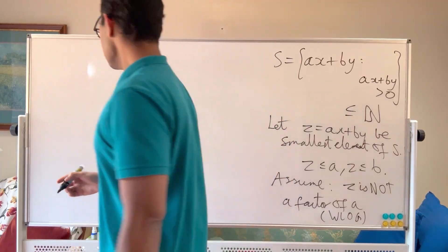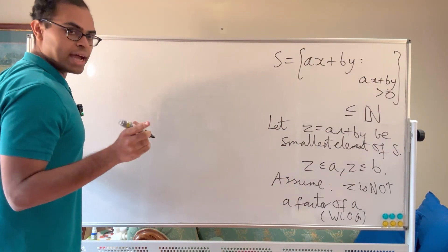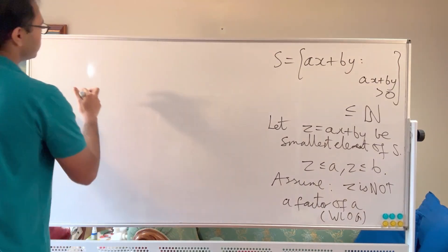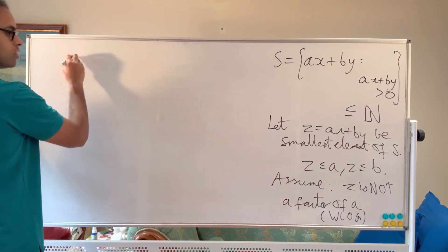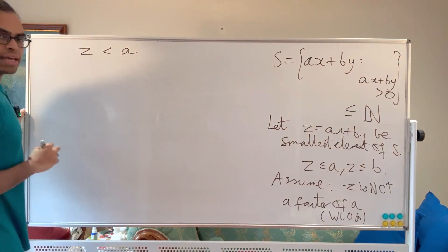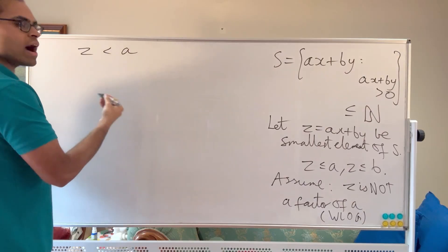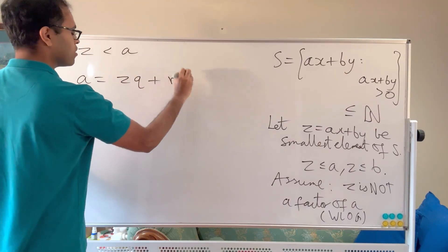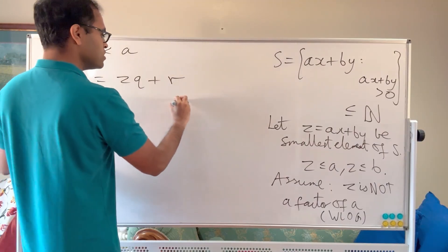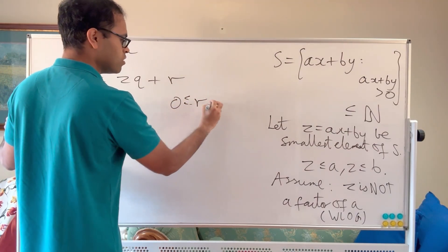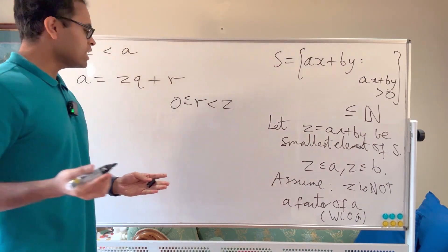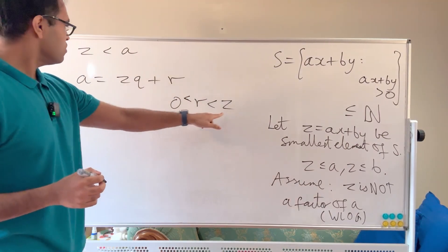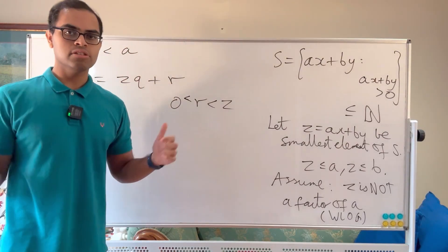Assume Z is not a factor of a. We use the Euclidean algorithm: since Z is less than a and doesn't divide it, we can do long division to write a equals ZQ plus R, where R is greater than 0 and less than Z. We know R is strictly greater than 0 because Z is not a factor of a. If R were 0, Z would divide a.